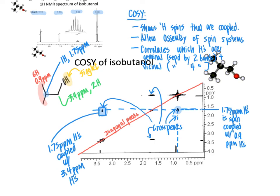Now that we have had a chance to look at correlation spectroscopy, what we are going to do in the next video is look at an additional type of 2D NMR spectroscopy referred to as heteronuclear single quantum coherence, or the HSQC experiment.